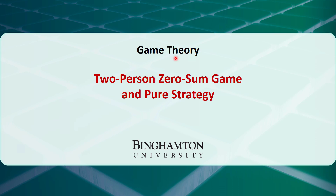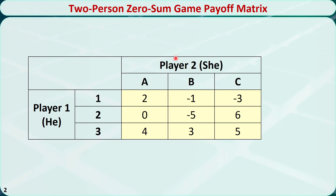In game theory, the decision makers are usually called players, and the decision making process is usually called a game. In this video, we will only consider games with two players: player 1 or the row player, and player 2 or the column player.